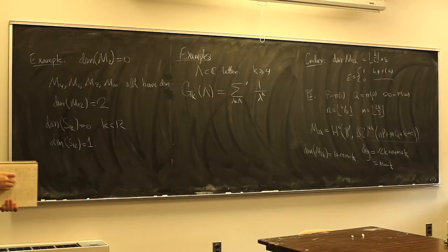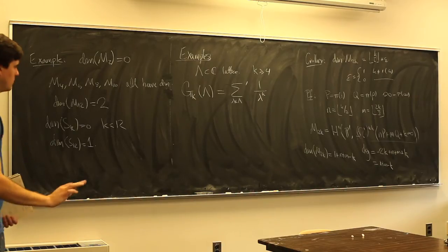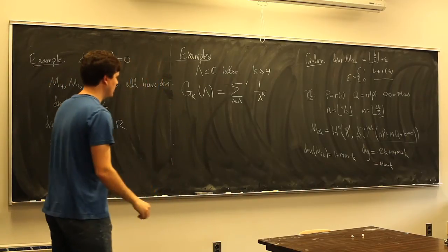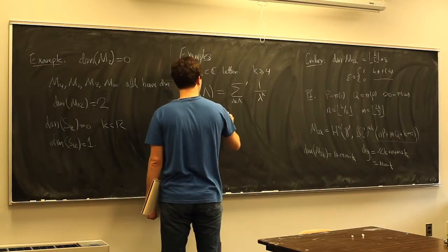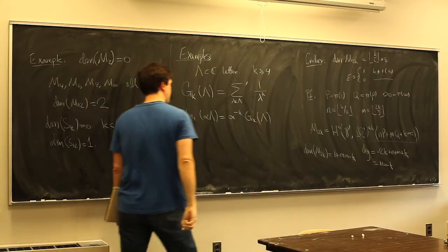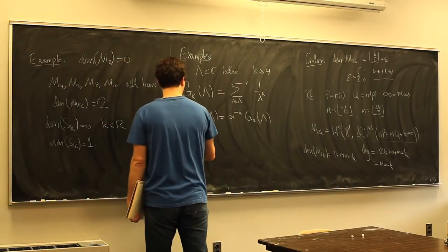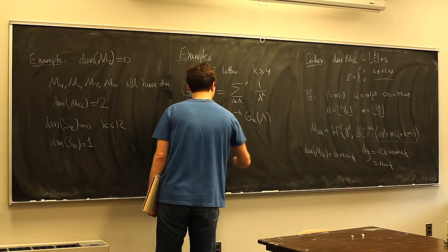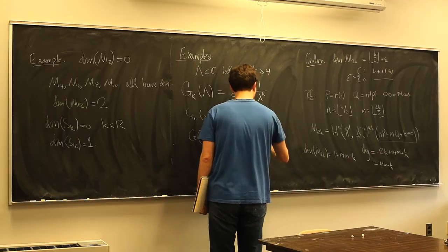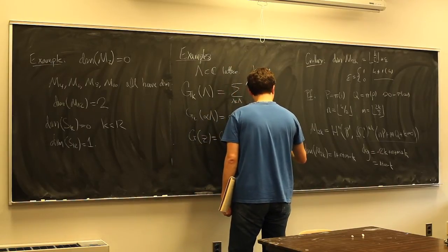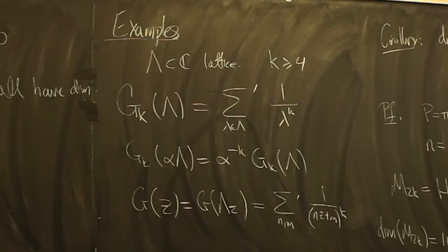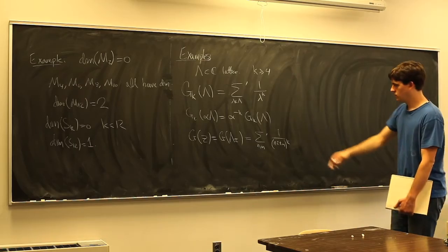Because k is large, this has good convergence properties. And G_k(αΛ) = α^{-k} G_k(Λ) clearly. So it looks like it's going to be a modular form; we just need to check holomorphicity. With G_k(z) = G_k(Λ_z), this is the sum over integers (n,m) ≠ (0,0) of (nz+m)^{-k}. Each term is holomorphic and convergence is good, so the result is holomorphic in z. As z → i∞, terms with n ≠ 0 go to 0, and k being even means the sum over nonzero m gives 2ζ(k). So G_k is holomorphic at infinity too, making G_k a modular form.